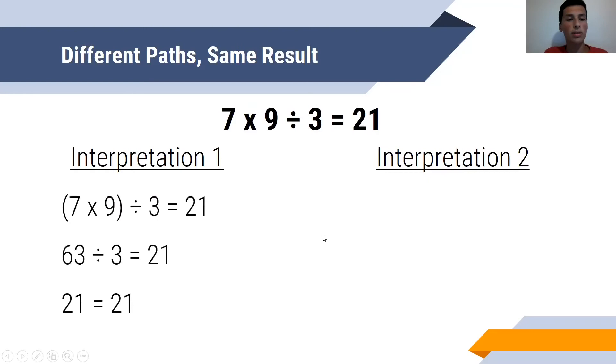In the first one, you do parentheses 7 times 9 divided by 3 equals 21. 7 times 9 is 63, 63 divided by 3 is 21, so that checks out. The other interpretation, 7 times in parentheses 9 divided by 3, so that's 7 times 3, is also equal to 21.